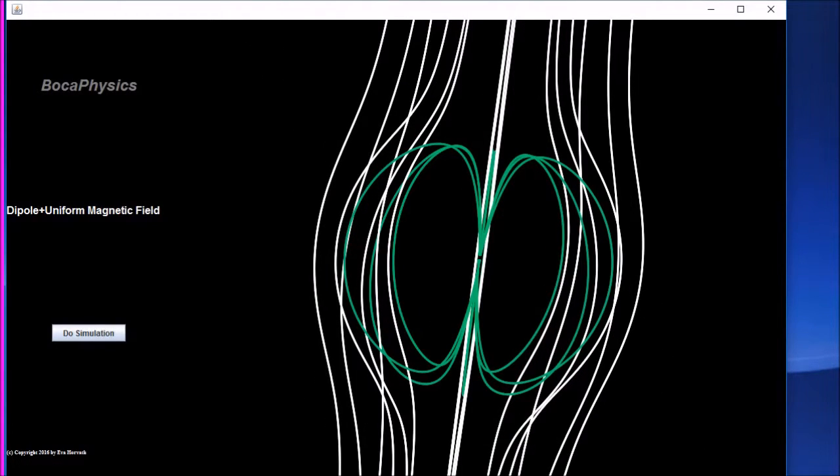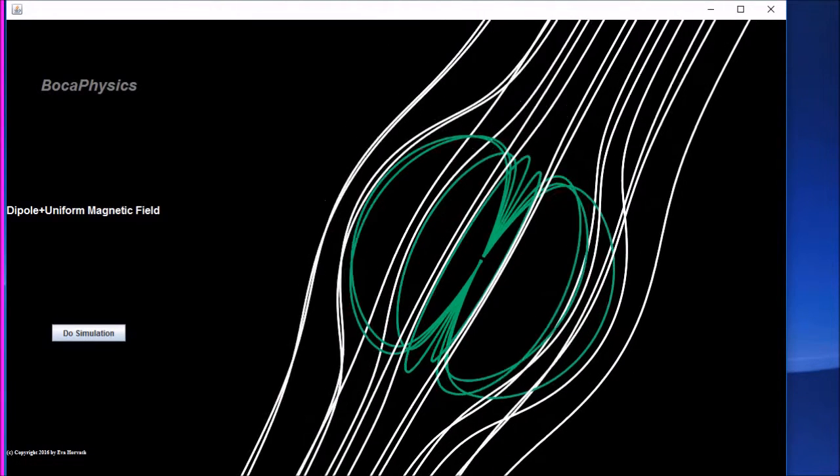In the absence of the dipole, the field lines due to a uniform magnetic field would simply be straight lines. Notice how they bend, however, around the spherical boundary enclosing the dipole.